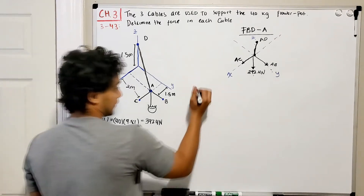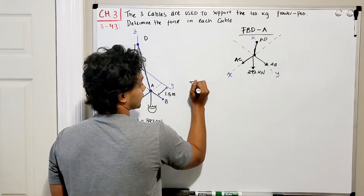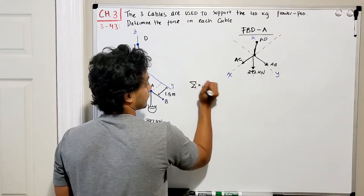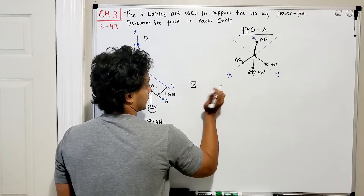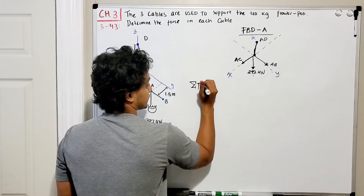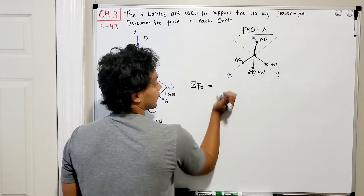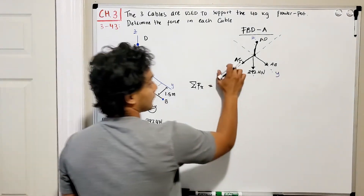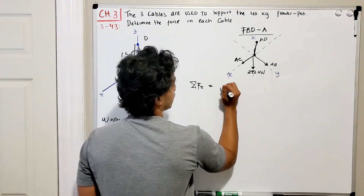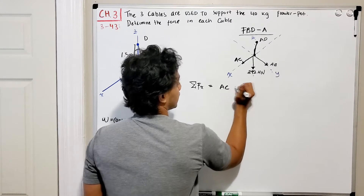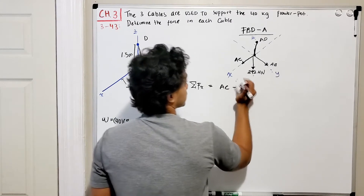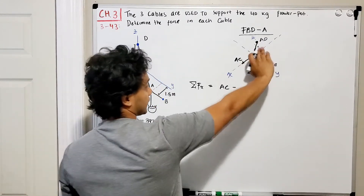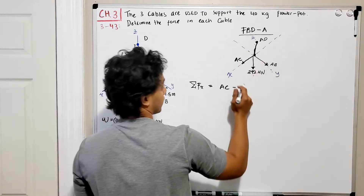Let's start by doing the summation of forces in the X direction. In the X direction, we have cable AC going in the positive direction, minus whatever component of cable AD is going in the negative X direction.